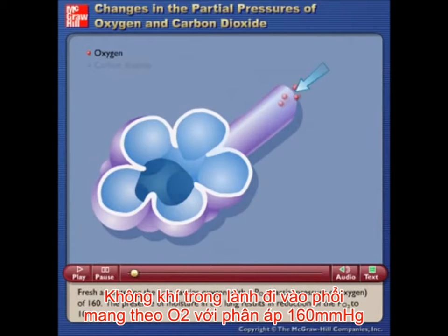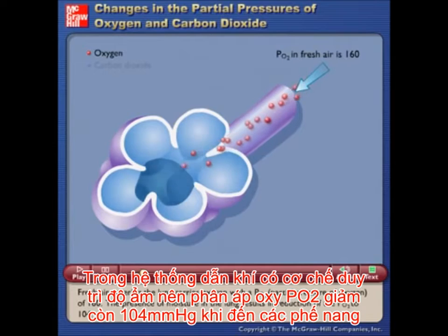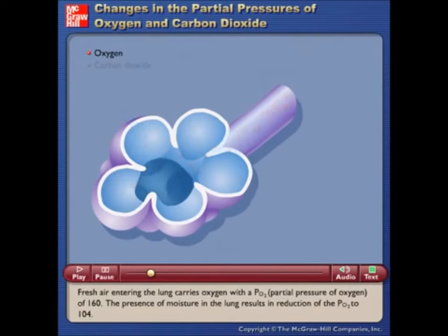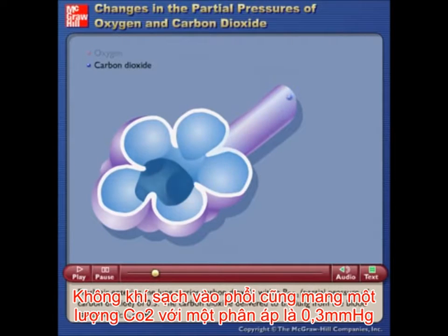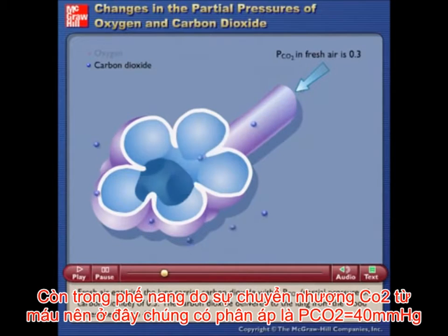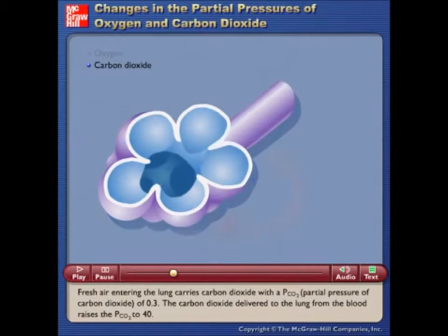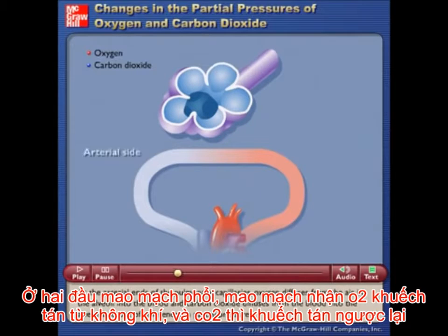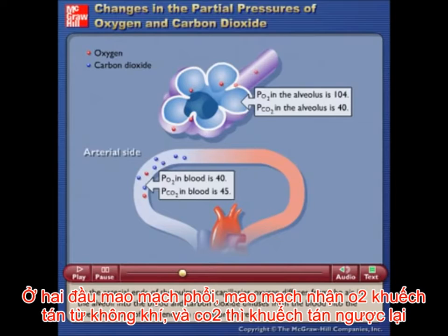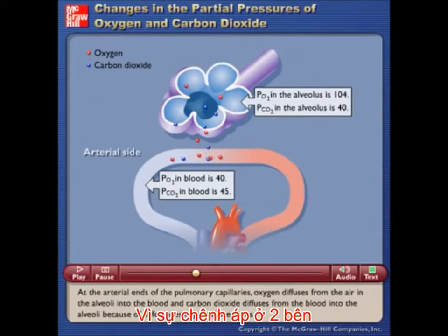Fresh air entering the lung carries oxygen with a pO2 of 160. The presence of moisture in the lung results in a reduction of the pO2 to 104. Fresh air entering the lung carries carbon dioxide with a pCO2 of 0.3. The carbon dioxide delivered to the lung from the blood raises the pCO2 to 40. At the arterial ends of the pulmonary capillaries, oxygen diffuses from the air in the alveoli into the blood and carbon dioxide diffuses from the blood into the alveoli because of differences in partial pressures.